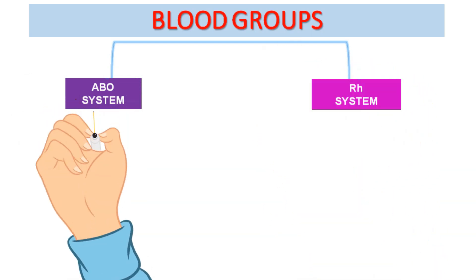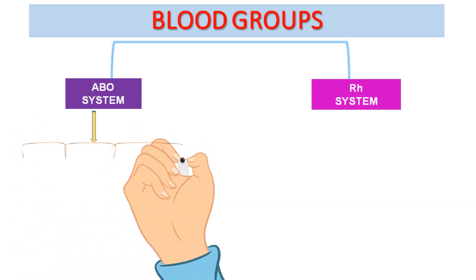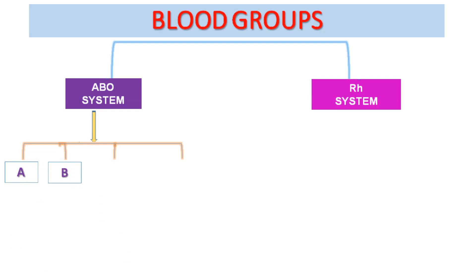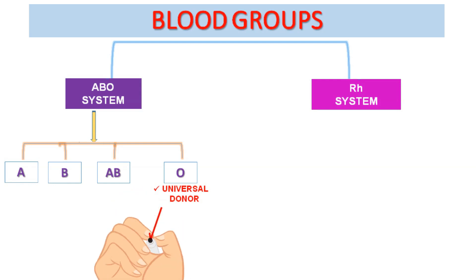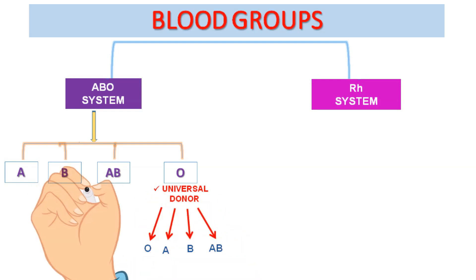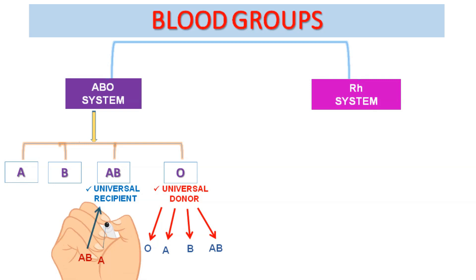According to the ABO system, human blood is classified into four types: A, B, AB and O. A person with O type blood is called a universal donor, as O type blood can be given to persons of all blood types — O, A, B and AB. A person with AB type blood can receive blood from all types and is called a universal recipient; an AB type person can receive blood from AB, A, B and O.